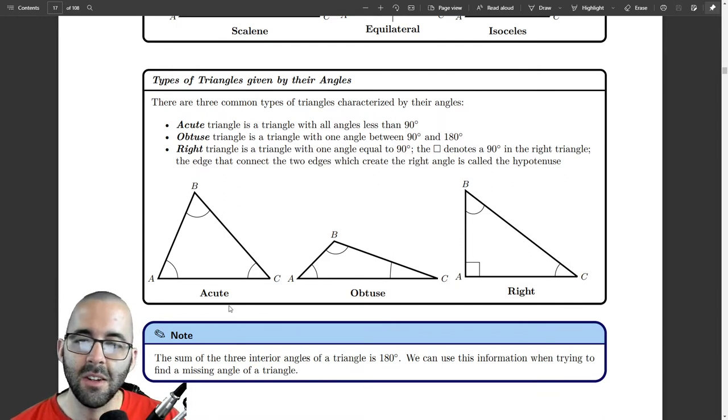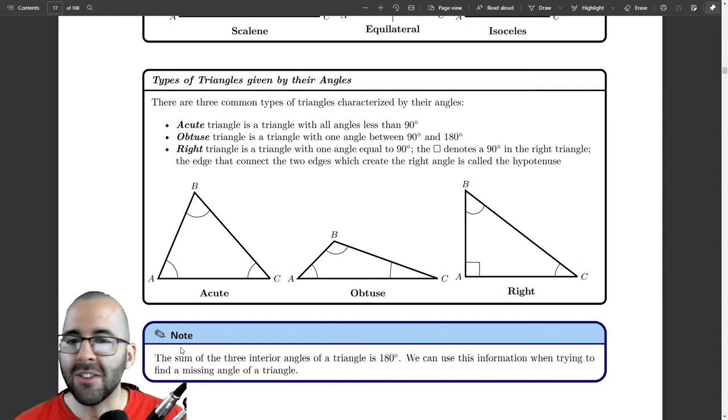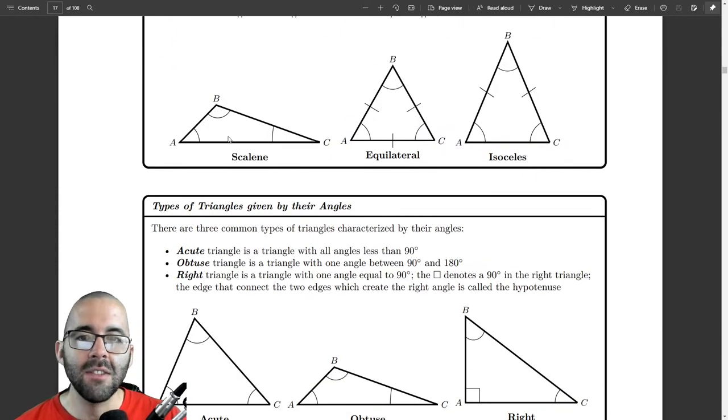We'll use these a little bit more as things go on. We got a little fun fact here. Maybe not so fun, depending on how you classify a fun fact. But the sum of the three interior angles of a triangle is 180 degrees. So, this angle plus this angle plus this angle is always 180 degrees. I don't care what kind of triangle you have. All of these triangles, their angles add up to 180 degrees.